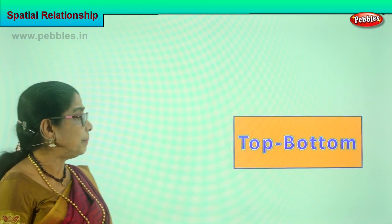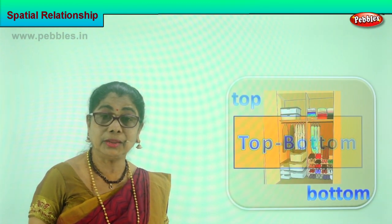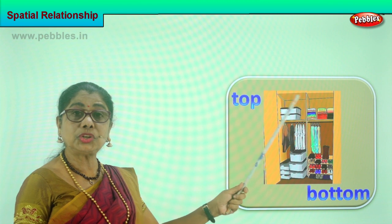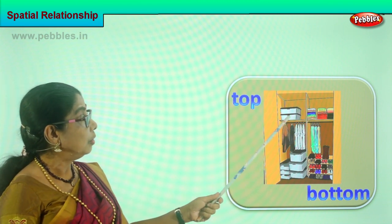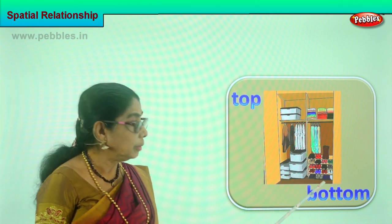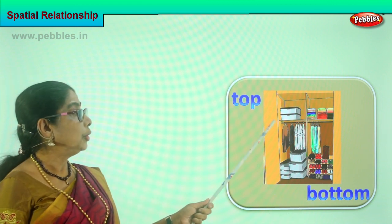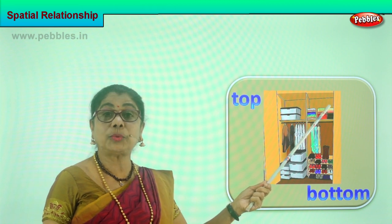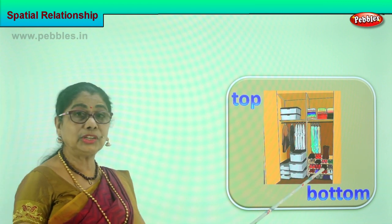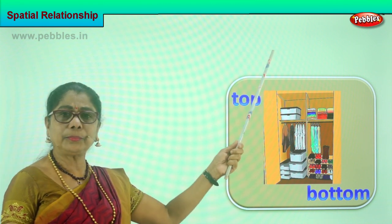Let's look at the spatial relationship between the top and the bottom. Top and bottom. Look at the picture and learn top. What is on the top, on the loft? What is at the top of the cupboard? You find all the boxes lined up at the bottom. At the bottom you have the shoe rack and clippers placed there. On the top you store away things you don't need to use daily. At the bottom you find boxes and a shoe rack that you need to use daily. Top, bottom.